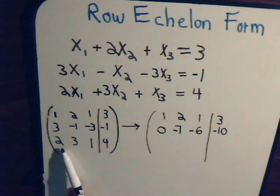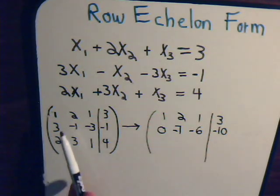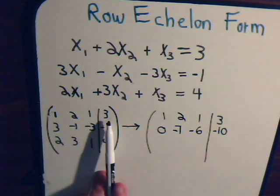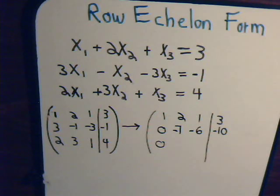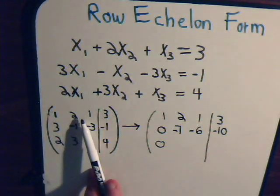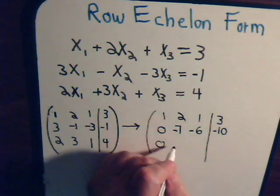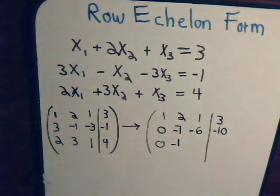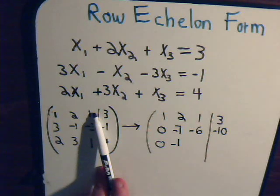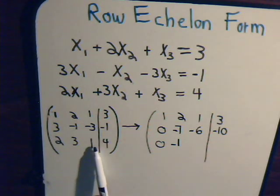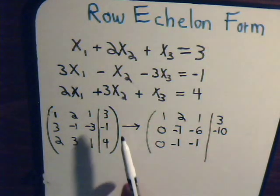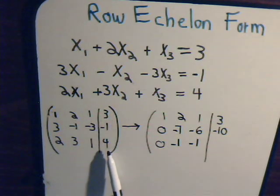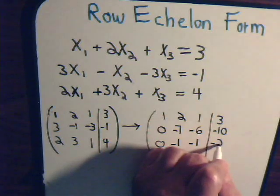Now we also want to make the entry in row 3 beneath the pivot equal 0. We imagine multiplying row 1 by negative 2 and adding to row 3. That gives 0 for the first entry; negative 4 plus 3 gives negative 1; negative 2 plus 1 gives negative 1; negative 4 plus 1 gives negative 3... wait, negative 6 plus 4 gives negative 2.